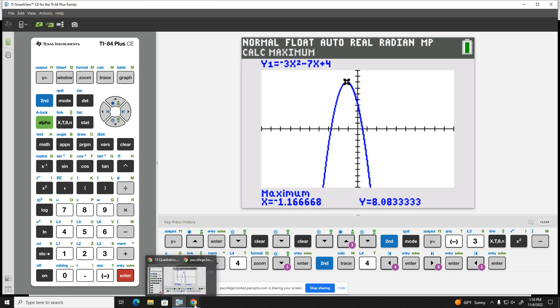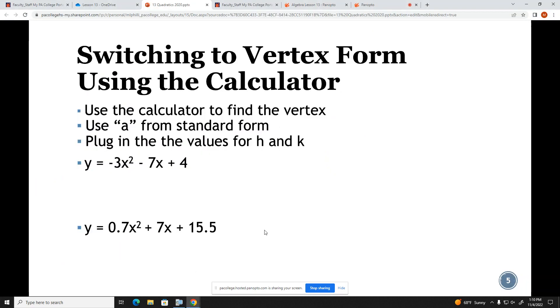So coming back to my PowerPoint, I like to conclude a little sketch so I remember what I was looking at. And so I had this parabola here. Here I found this vertex, which was a maximum point. And I had for that point a -1.17, rounding to two decimal places, and 8.08, again rounding to two decimal places.